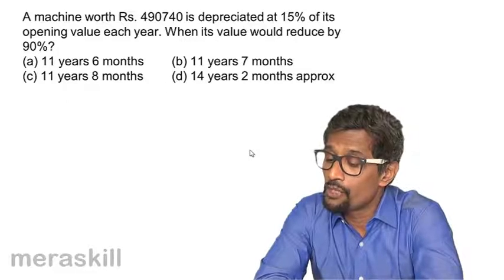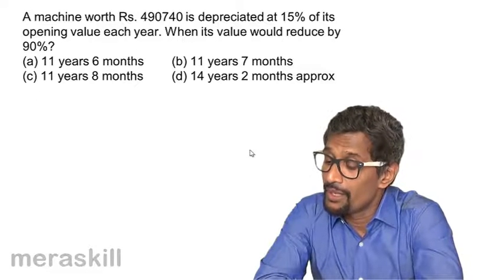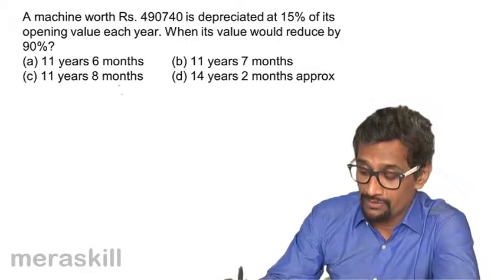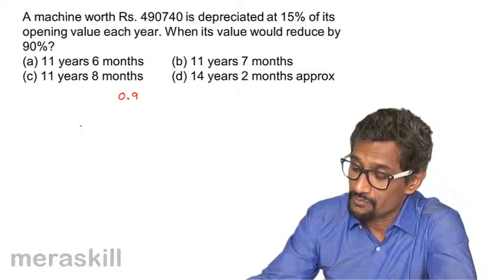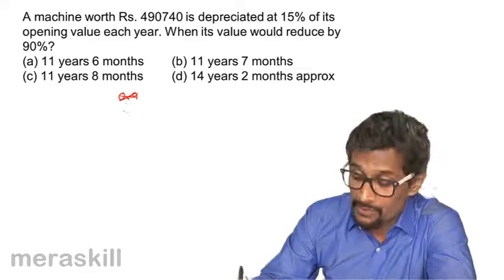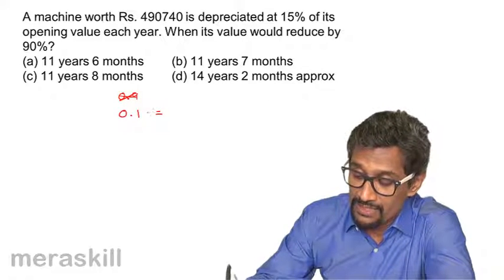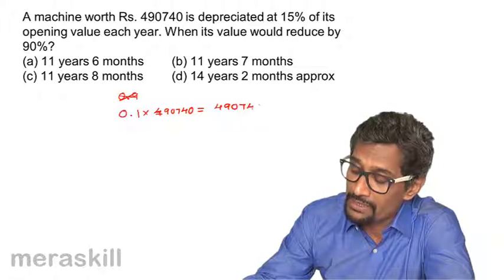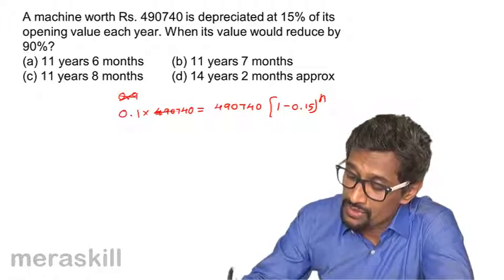The same machine worth ₹4,90,740 is depreciated at 15% of its opening value each year. We need to find when its value will reduce by 90%, meaning the remaining value is 10% of the original. So scrap value equals 0.1 times 4,90,740. The equation becomes: 0.1 times 4,90,740 equals 4,90,740 into (1 minus 0.15) raised to n, and the cost cancels out, leaving 0.1 equals 0.85 raised to n.